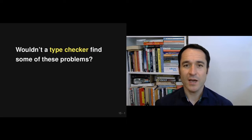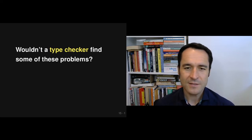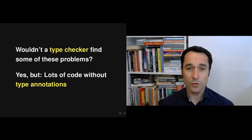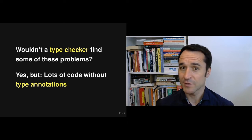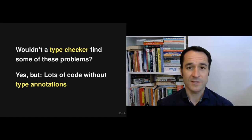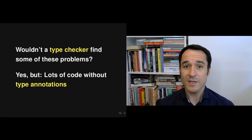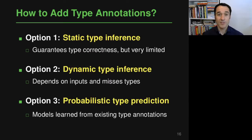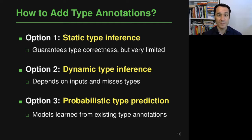You might ask whether a type checker would find many of these problems, since they are somewhat type-related. The answer is yes, but there's a problem: we're talking about code written in a dynamically typed language, which means most of this code is not annotated with type annotations. This is a general problem — there's a lot of code written in JavaScript, Python, and other dynamically typed languages, most of which is not annotated even though the language allows it.